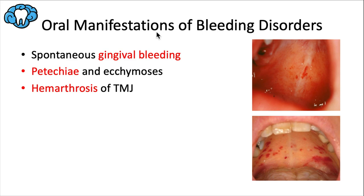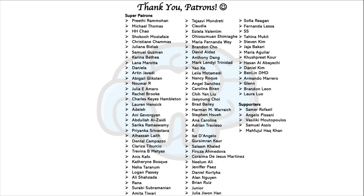Lastly, oral manifestations of vascular wall defects, platelet disorders, or coagulation issues include easy or spontaneous gingival bleeding. Oral tissues like the soft palate, tongue, and buccal mucosa may show petechiae or larger ecchymosis. You may also see jaundice, pallor, and ulcers. Hemarthrosis of the TMJ — bleeding into the jaw joint — is a rare finding but has been specifically linked to hemophilia.